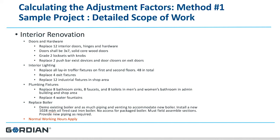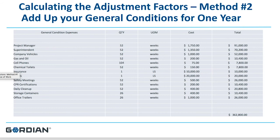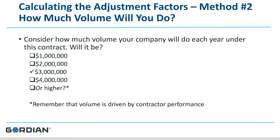Add your general condition expense and divide it by how much work you think you will do each year. General condition expenses for one year include your project manager, superintendent, pickup trucks and company cars, gas and oil, chemical toilets, bonds, and insurance. Be certain to add all of those costs up for one year. Then do simple division: divide your general condition expense of $362,800 by your estimated volume of $3 million, giving you a 12% differential. Remember that volume is driven by contractor performance.